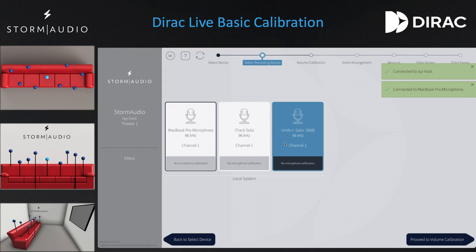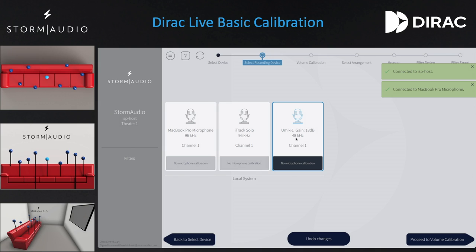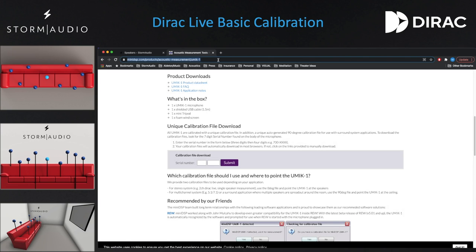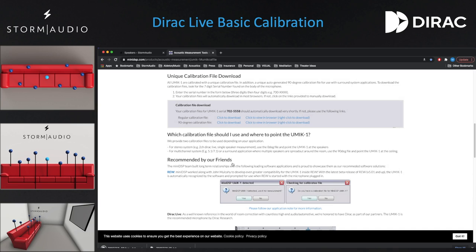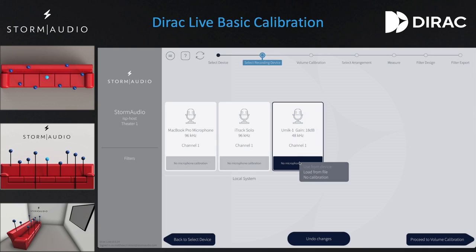All of the audio inputs connected to your computer will be shown here. Select the U-Mic 1. We will now need to import the calibration file for the microphone. If you have purchased a microphone mini kit from Storm Audio or have a U-Mic 1 but do not have the microphone calibration file, visit www.minidsp.com/products/acoustic-measurement/U-Mic-one and enter the seven digit serial number printed on the sticker at the base of the microphone. You will want to download both the regular and 90 degree calibration file. Save these files in a location where they are easily accessible.